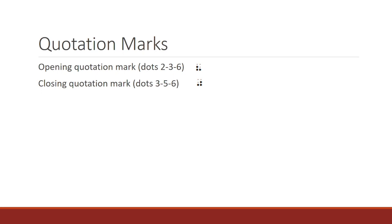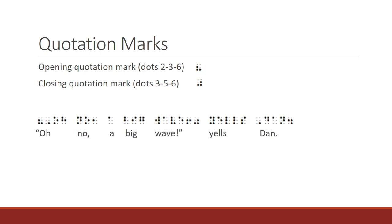One way to remember these is that the marks appear to face each other. The example sentence is: Oh no, a big wave, yells Dan. This sentence begins with the opening quote, followed by the capital indicator. Notice there are no spaces between the punctuation, capital indicator, and the O, just like print. There is a comma after the word no, and then after the word wave, there is an exclamation mark followed by the closing quote. The sentence ends with a period.